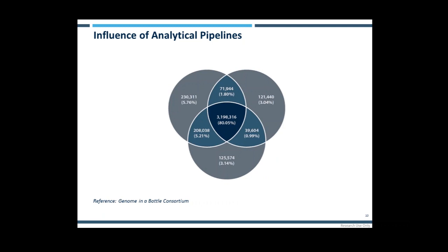An example of the immense influence that informatics software can have on resulting data is demonstrated by this Venn diagram compiled by the Genome in a Bottle Consortium. The same data was analysed with three different pipelines, and there was significant variability in the resulting calls, with only 80% being shared by all pipelines. This doesn't mean any pipeline is definitively right or wrong. What we should be aiming for is to provide a so-called known sequence — using a well-characterised reference standard with a known allelic frequency, sequenced multiple times, as a reference against which to compare the data you actually achieve.